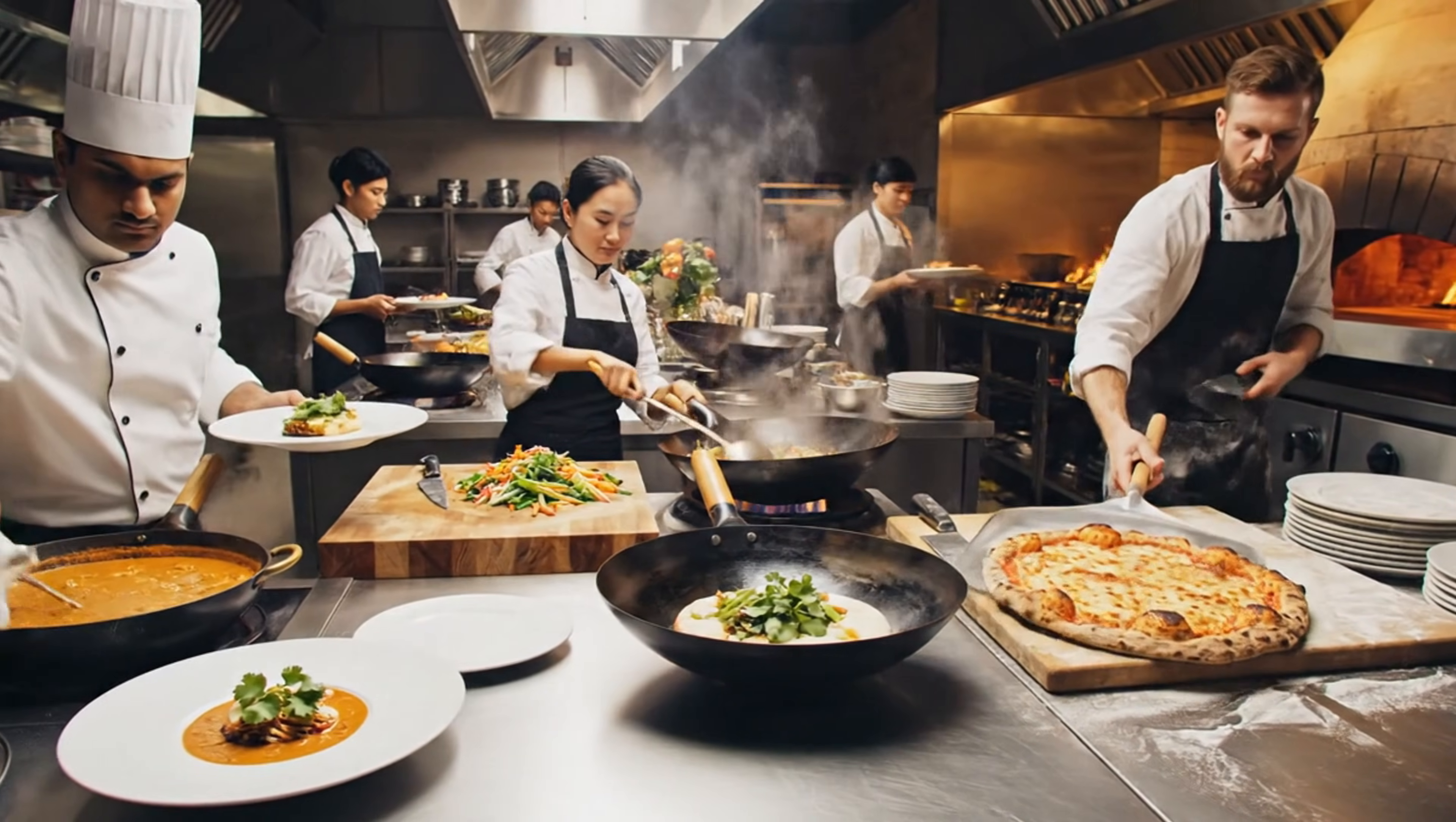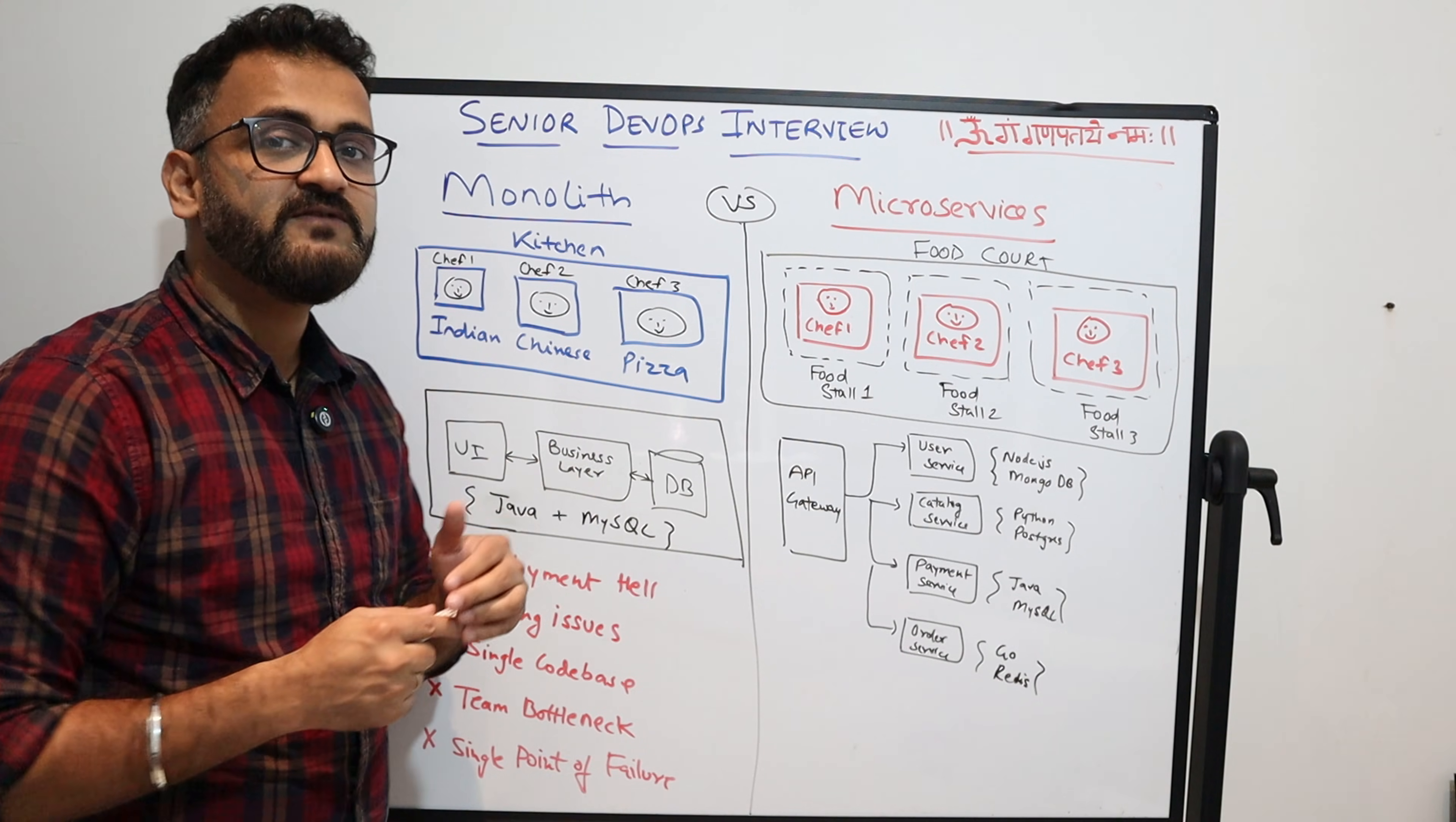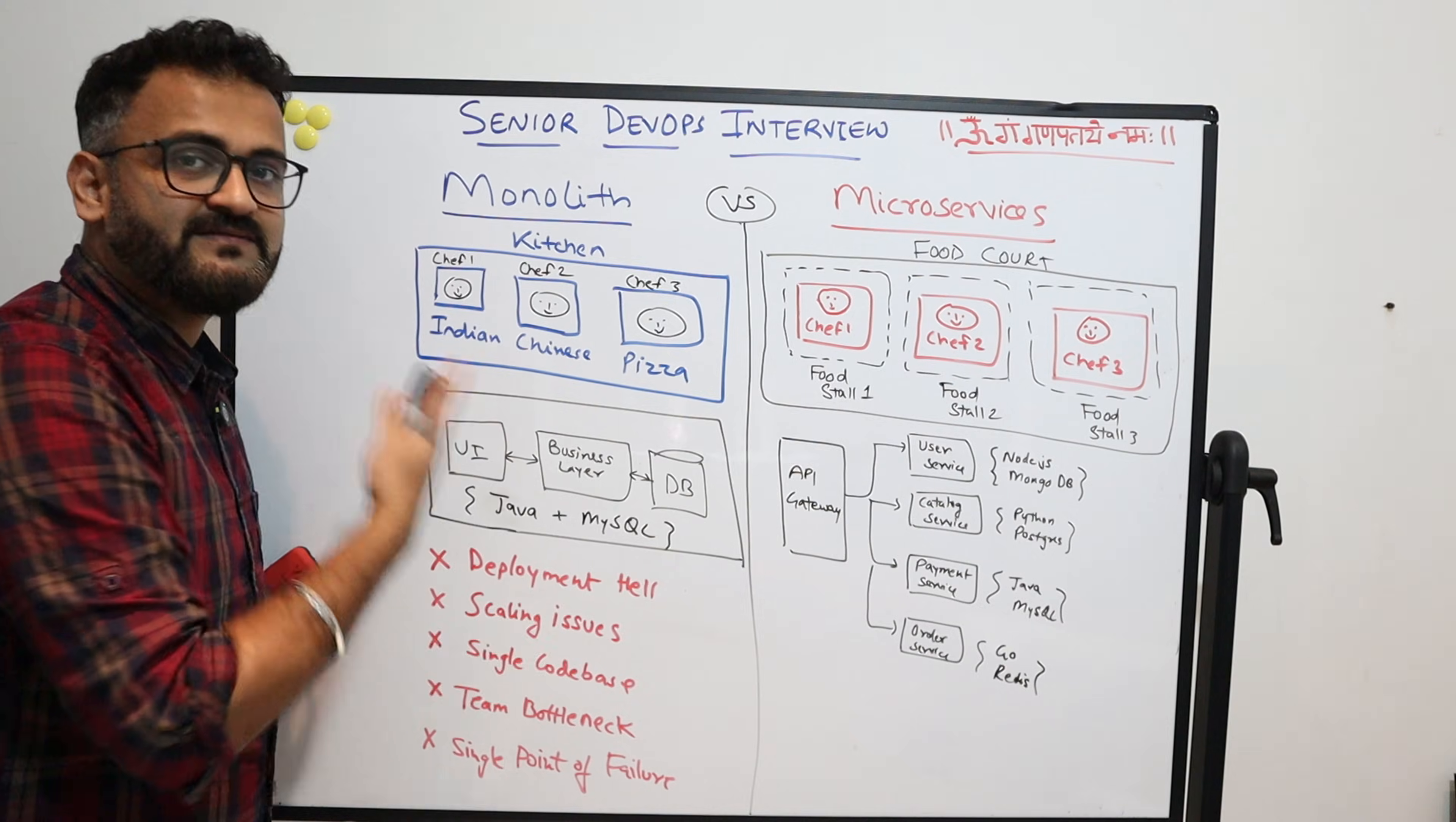The chef 2 and chef 3, although they are making Chinese and pizza, have to rush out of premises and leave the kitchen. They would not be able to serve even though the problem was only with the Indian chef and the food. So this is how monolith works—initially you have everything within the same environment.